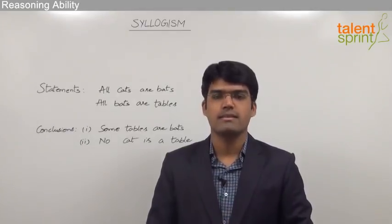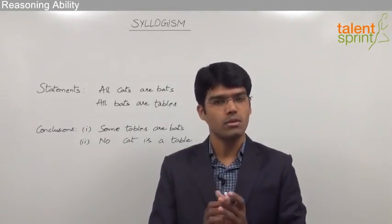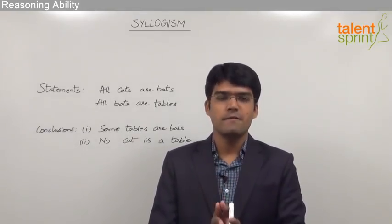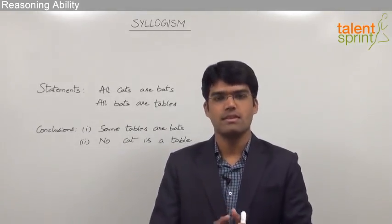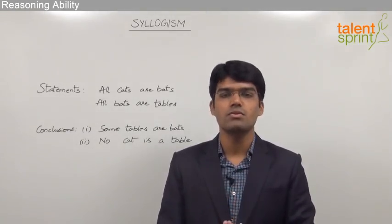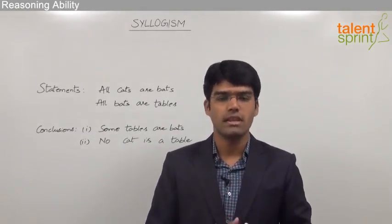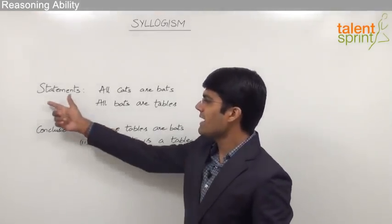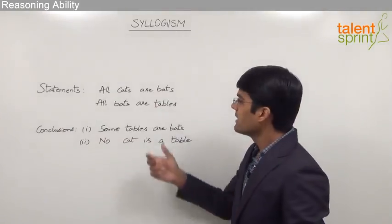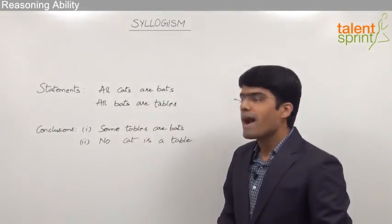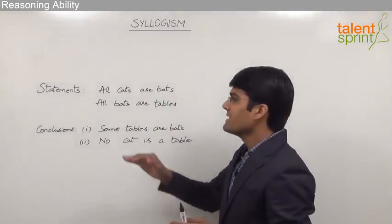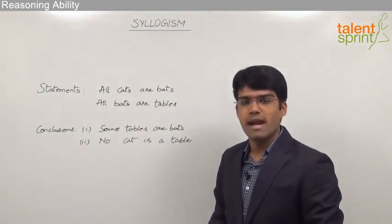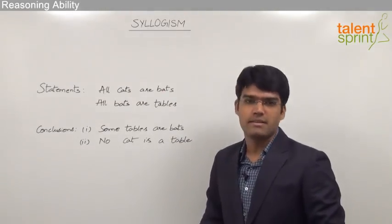Let us take an example to understand how a question from syllogism looks like. In syllogisms, a set of statements and a set of conclusions is given to us, and we are supposed to decide which of the conclusions are true with respect to the given statements. The statements here are: all cats are bats, and the second statement is all bats are tables. So there are two statements — all cats are bats and all bats are tables.